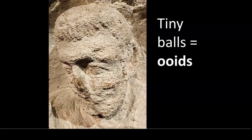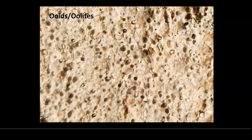A final example is ooids — tiny little balls of calcium carbonate that precipitate in caves or tidal lagoons where material is moving around a little bit. Think of a snowball made of calcium carbonate. You can see this in a weathered Roman statue where the little circles show where ooids used to be before they dissolved away.